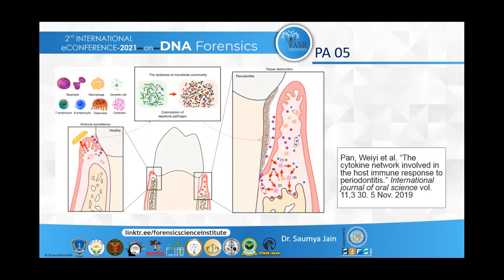This diagram explains how periodontitis happens. In the healthy state, the local challenge and mild host immune response are balanced. In this state, there is an appropriate number of infiltrating neutrophils in the gingival sulcus, as well as resident immune cells present in the gingival tissue, which includes helper T17 cells and lymphoid cells.